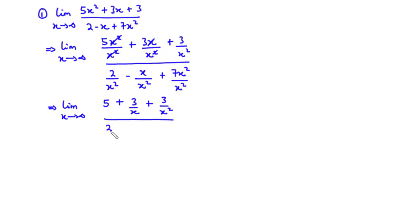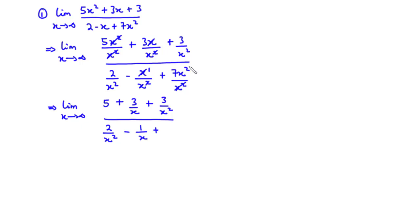In the denominator: x cancels one power of x giving 1/x, and x² cancels x² leaving 7.